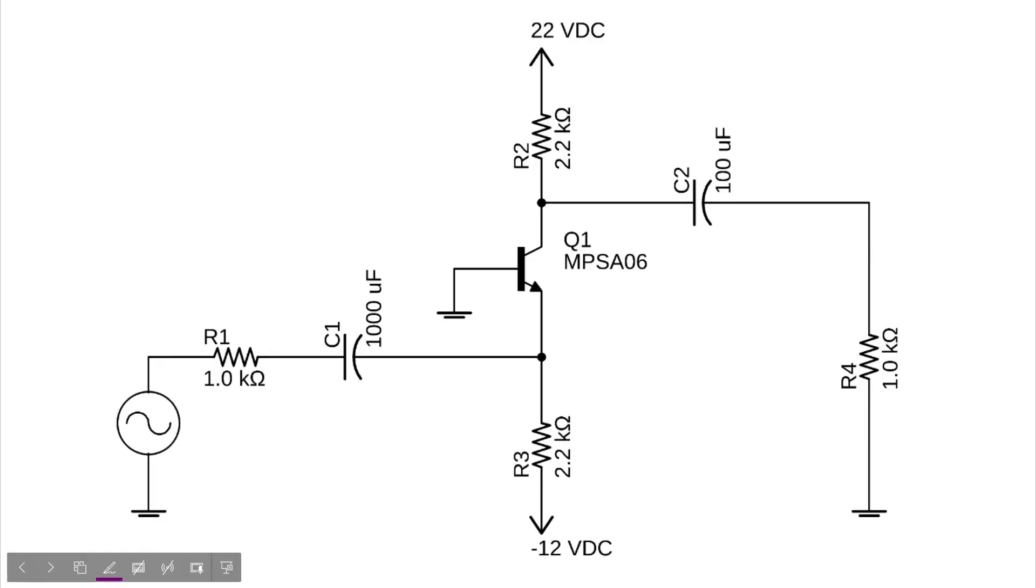Okay, so that was 2 volts peak from the signal generator, 10 millivolts peak at the emitter, and then 1.5 volts peak at the output. And we said that gain is equal to V out over V in, which in this case is 1.5 divided by this 10 millivolts, which gives us a gain of 150.